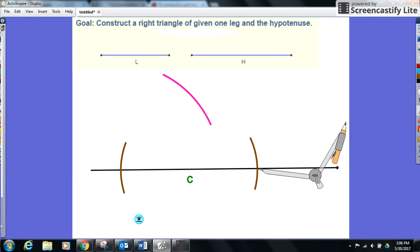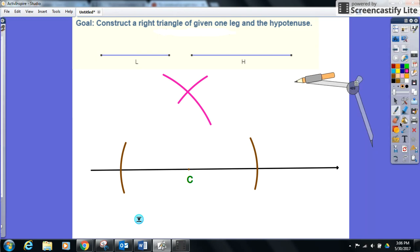And make sure these two arcs do intersect each other. And let's give that point of intersection a name—this point right here, let's call it point B.